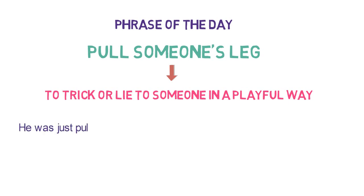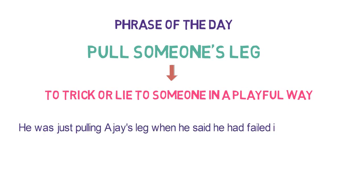He was just pulling Ajay's leg when he said he failed in the exam. He was trying to joke or tease Ajay by telling him that he failed while actually he didn't. So, we used pull someone's leg here.